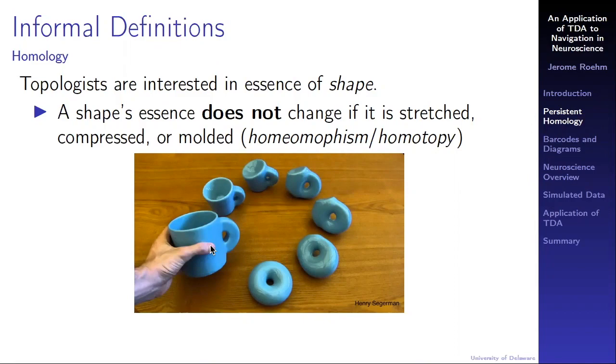I will now introduce some informal definitions to give some intuition about the concept of homology. Topologists, like myself, are concerned with the essence of shape. A shape's essence does not change if it is stretched, compressed, or molded. These are concepts we call homeomorphism and homotopy. Suppose we are looking at the shape of a coffee mug, pictured here on the left, and we mold it into the mug shape here. The essence of that shape has not changed. Similarly, moving to the next shape, the essence remains unchanged. Proceeding around the circle to the donut, at no point have we changed the essence of the shape.